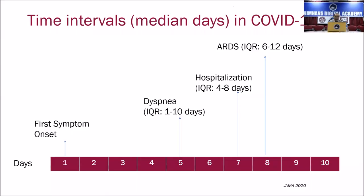This shows the time course of development of clinical manifestations. After an incubation period of 5 to 7 days, the first symptom that appears is fever, and within 3-4 days they develop a dry cough. If they do not seek medical help, they can go on to shortness of breath and dyspnea by about the 5th day. If they are elderly and in the high-risk group, they will need to get into hospital by the 7th or 8th day, and by 6th to 12th day they get into acute respiratory distress and will require ventilatory assistance.